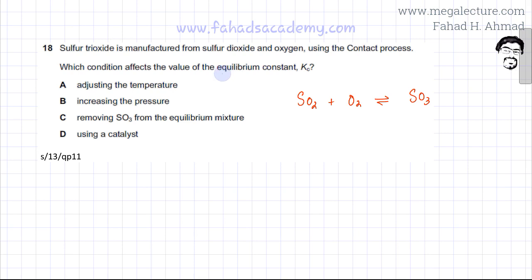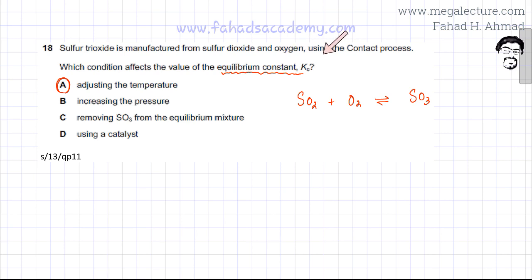There is only one thing that affects the value of the equilibrium constant Kc, and that is temperature. If you adjust the temperature, the value of the equilibrium constant would change. This applies to all equilibrium constants, whether it's the dissociation constant, solubility product, or any other equilibrium constant. The value of Kc only changes with temperature — pressure has no effect, and changing concentration has no effect.